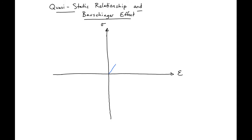So before yielding, if I were to load it, I'm going to have a modulus of ES, and if I were to then unload it, I'm going to come back right on that same line before yielding.